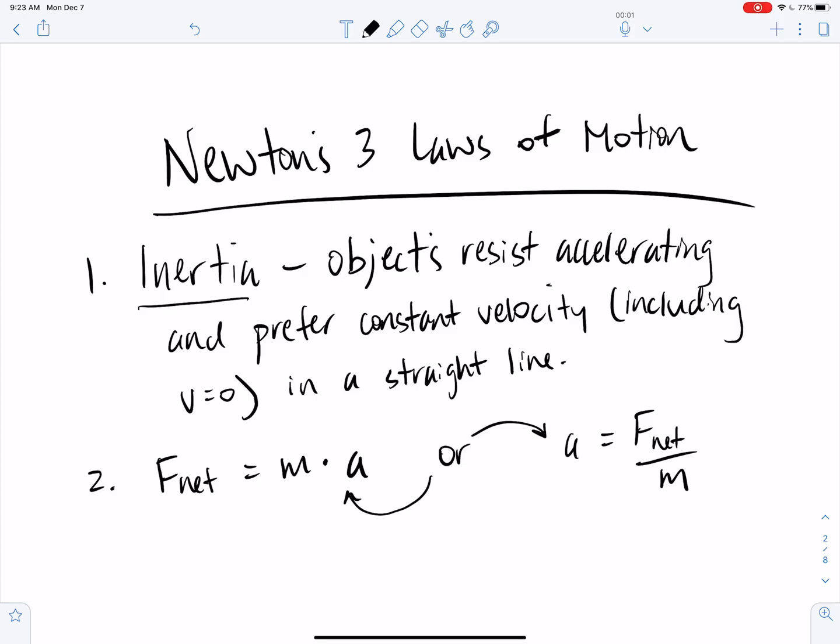So the more force you put on an object, the more it's going to accelerate. The more mass an object has, the less it's going to accelerate, right? Which actually relates back to the first concept of inertia, right? Objects with more mass have more inertia and are going to be even more resistant to accelerating.